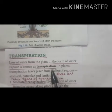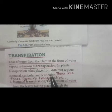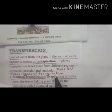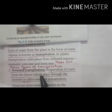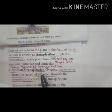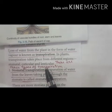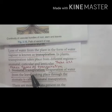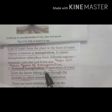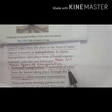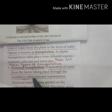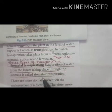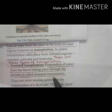Now transpiration takes place in different ways. There are 3 main types of transpiration: first is stomatal transpiration, second is cuticular transpiration, and third is lenticular transpiration. Evaporation of water from the leaves taking place through the stomata is called stomatal transpiration.